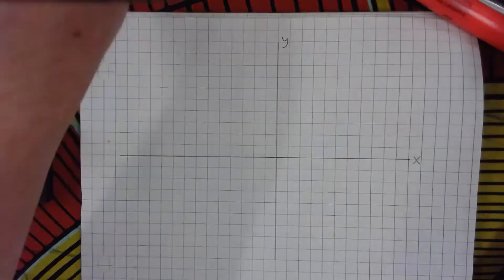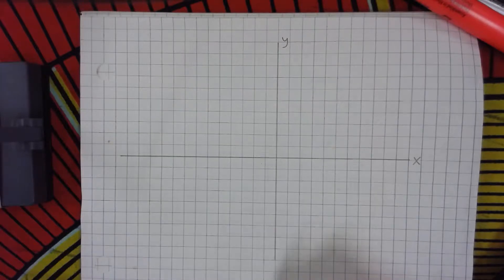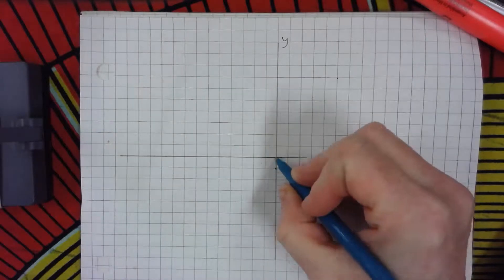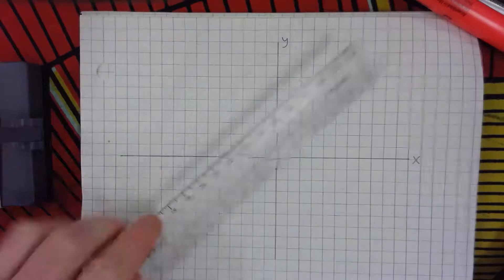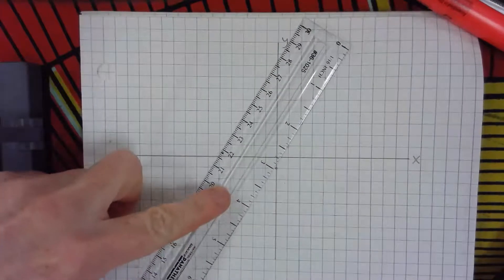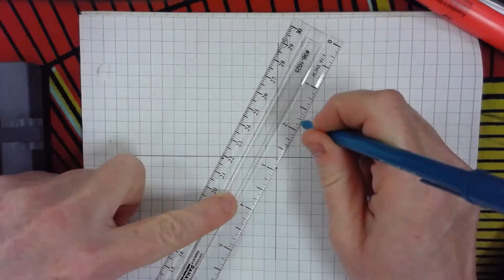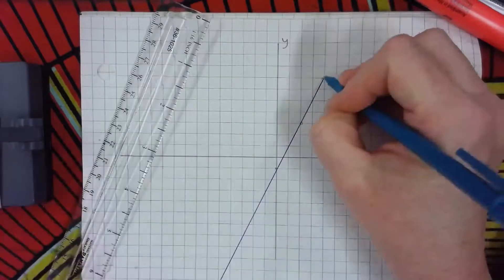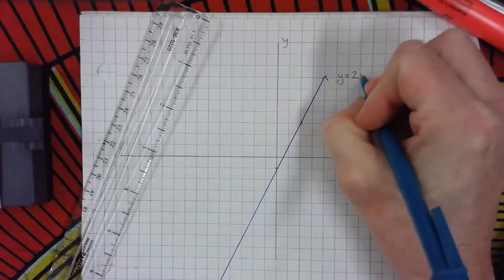I've got myself a little grid here. I'm going to start with y equals 2x minus 1, so I go to minus 1 and then rise 2, run 1. I connect all those dots and create my line. I'll write y equals 2x minus 1 at the top.